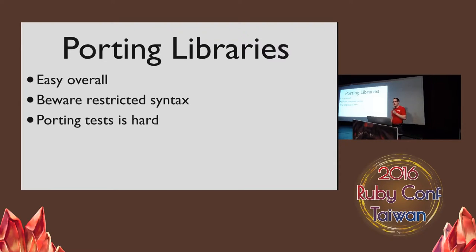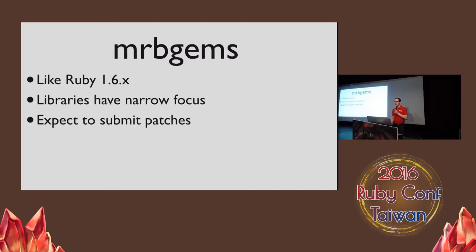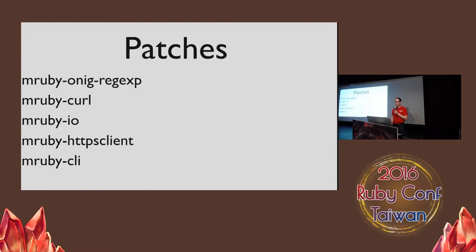There are many pure Ruby libraries already written in CRuby that you'll want to use in mruby to make your life easier. Overall, this is pretty straightforward, but you have to be aware of the restricted syntax. Unfortunately, importing the tests is much harder due to the differences in the way tests are run in mruby. Gems for mruby feel a lot like working with libraries from Ruby 1.6, because there haven't been enough people working in mruby to build up broadly applicable libraries. mruby libraries often have a very narrow focus, so you either have to hunt for a library that fits your use case or submit patches. So far, I've submitted patches to all of these libraries — some for small behavior changes, some for supporting different platforms.